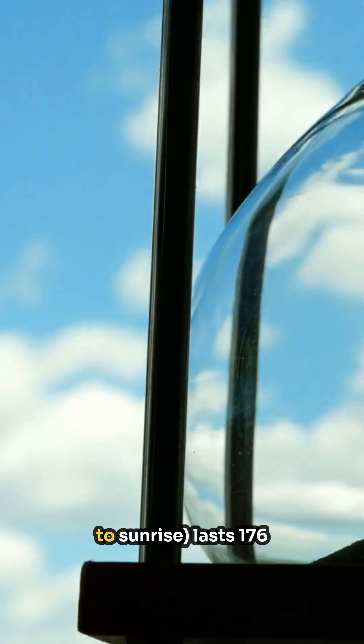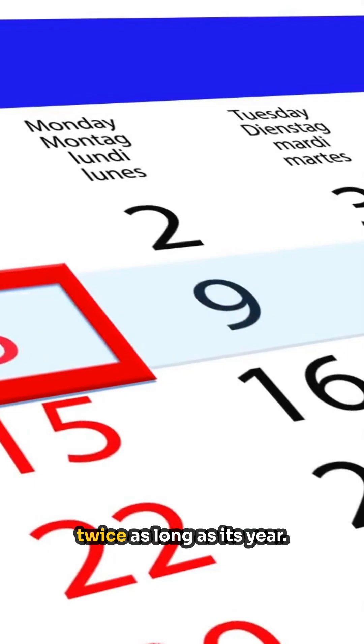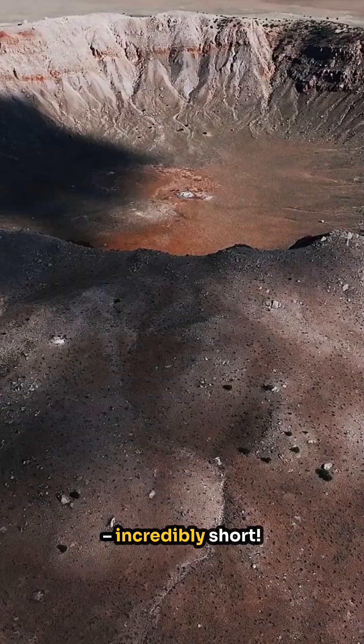A Mercury day, sunrise to sunrise, lasts 176 Earth days, almost twice as long as its year. A Mercury year is only 88 Earth days, incredibly short.